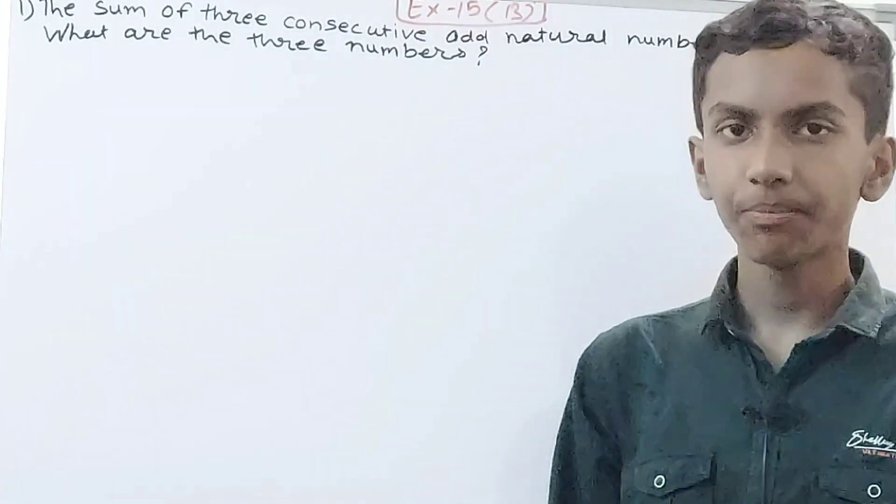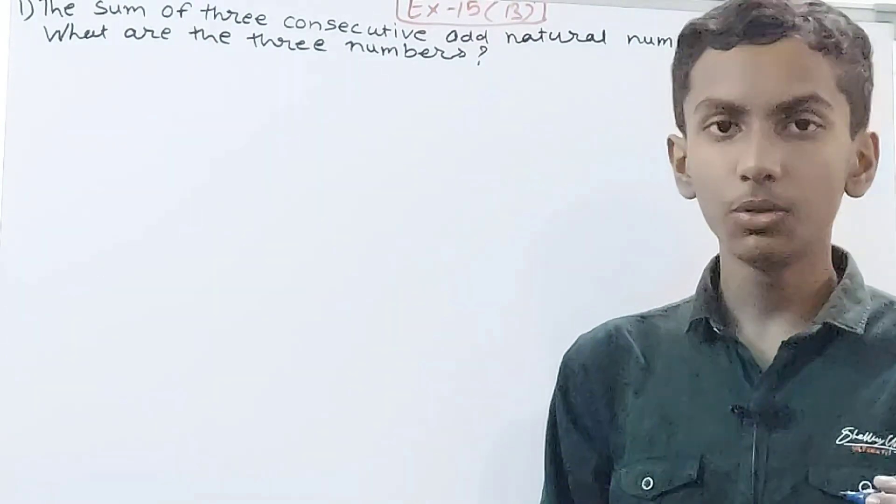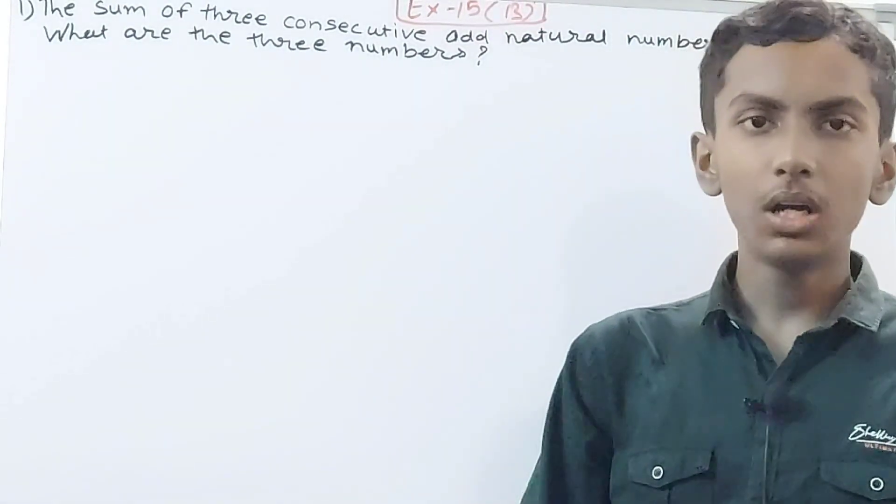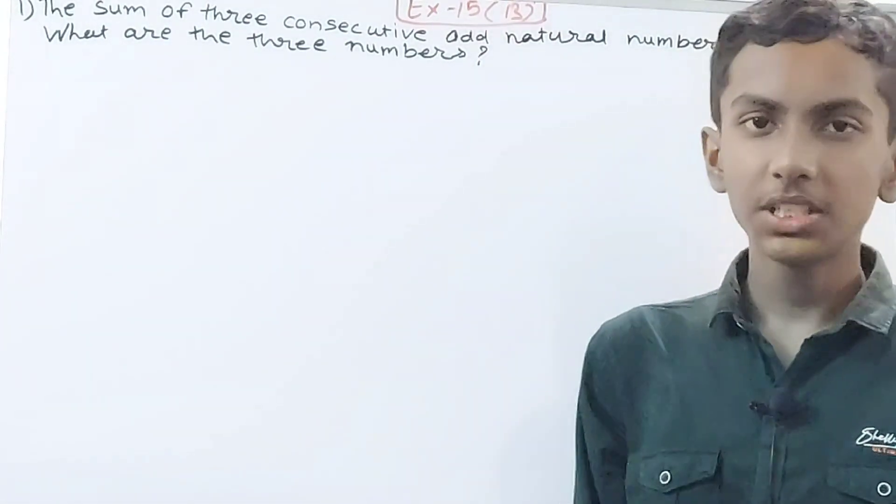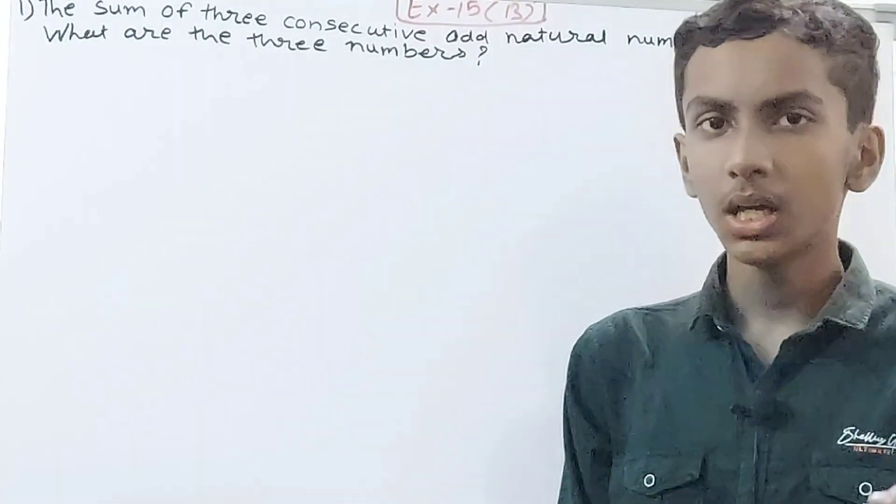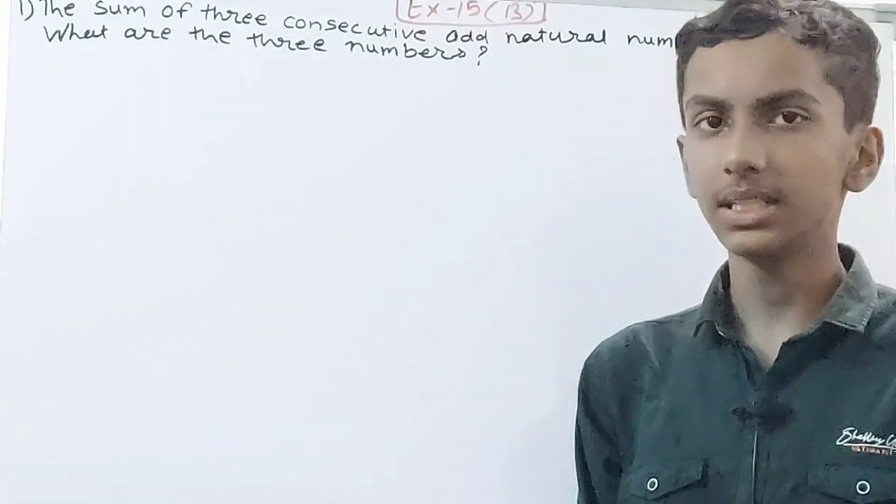Like we have 1, 2, 3, but if we come to odd numbers you have 1, 3, 5, 7, 9, 11, and so on. So basically we have to find these three numbers whose sum will be 87.